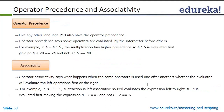Operator precedence and associativity: like any other language, Perl has operator precedence, where some operators are evaluated by the interpreter before others. For example, in '4 + 4 * 5', multiplication has higher precedence, so '4 * 5' is evaluated first. It is similar to how expressions are evaluated in any programming language.